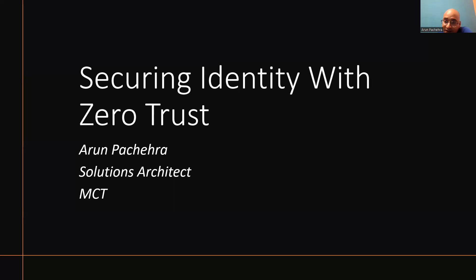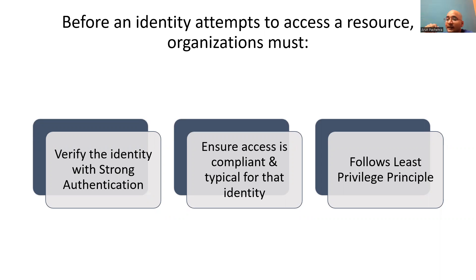Identities could be anything accessing other resources or applications — users, applications, services, or devices. In the Zero Trust security model, they function as a powerful, flexible, and granular way to control access to data. Before an identity attempts to access a resource, organizations must verify identity with strong authentication, ensure access is compliant and typical for that identity, and follow the least privilege principle. Once verified, access to resources is controlled based on organization policies, ongoing risk analysis, and other tools.